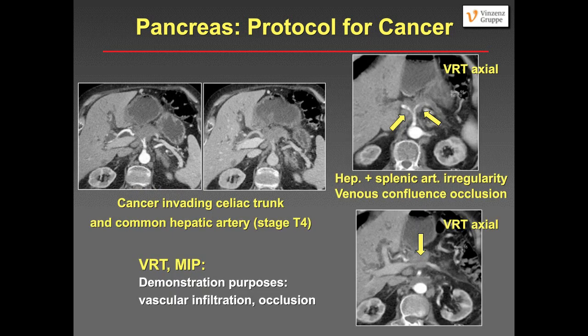We also perform volume rendering or MIP reconstructions. Here you see a patient with a large cancer invading the celiac trunk — the tumor sits on and encases the celiac trunk and the common hepatic artery, clearly stage T4. With volume rendering, another large cancer is shown on a paraxial volume rendered image, with the cancer surrounding the celiac trunk causing vessel irregularity of the celiac trunk, hepatic artery, and splenic artery — also T4 stage. You also see this tumor at the venous confluence, occluding it, which nicely shows the entire surgical problem in one image.